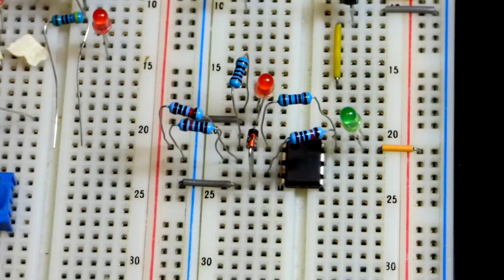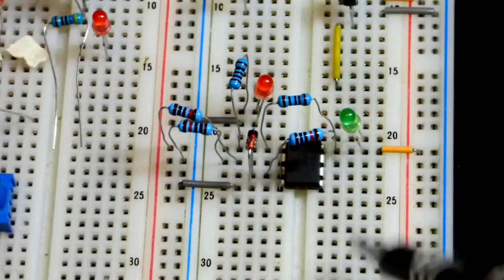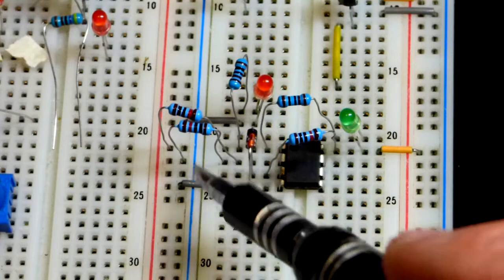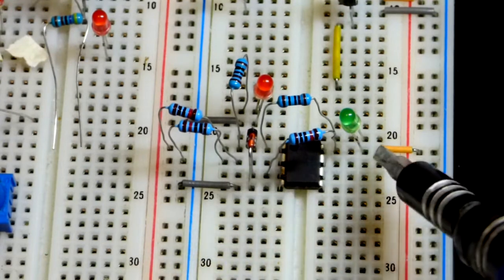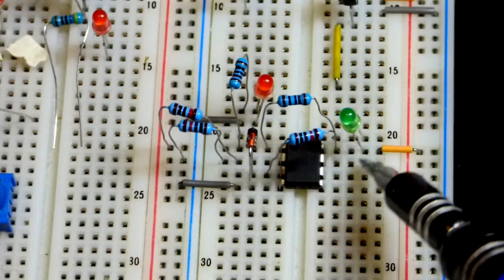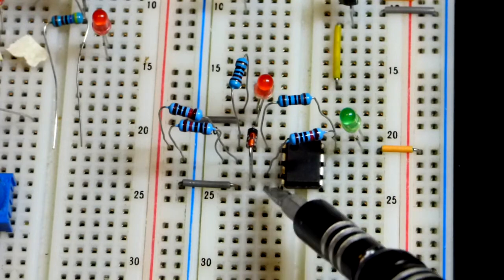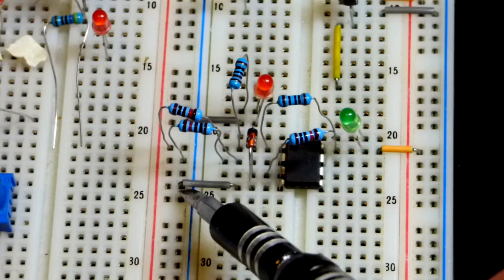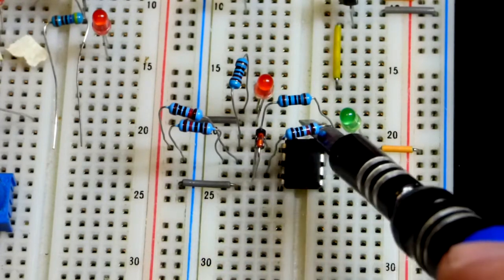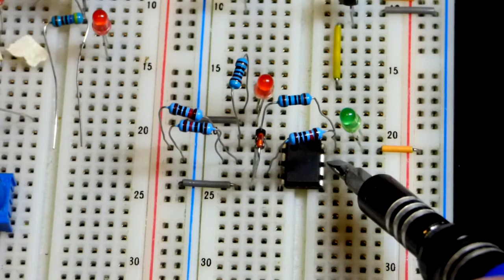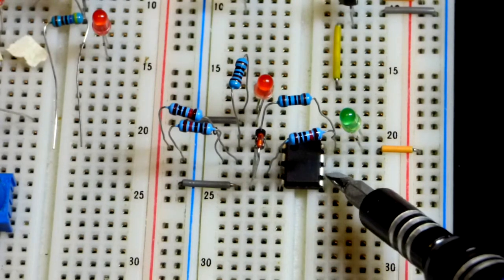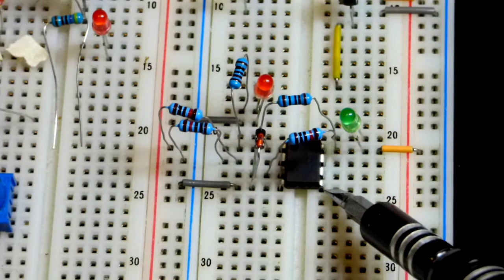This is the LM358. We use that a lot recently, it works good with a single supply. We got the VCC up there to the positive supply and the ground pin, pin 4, to the negative supply.